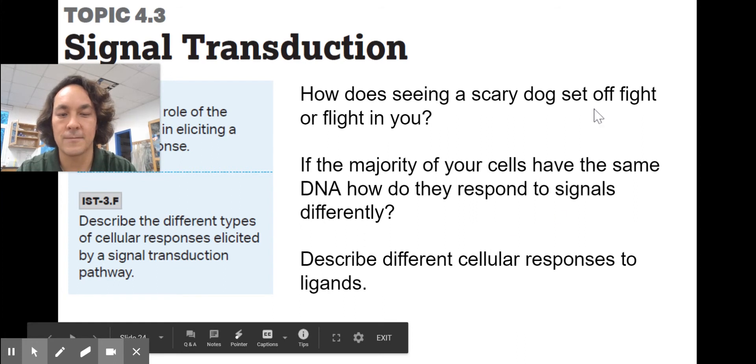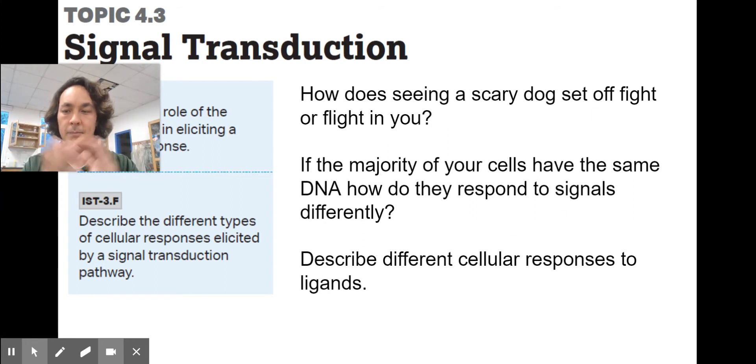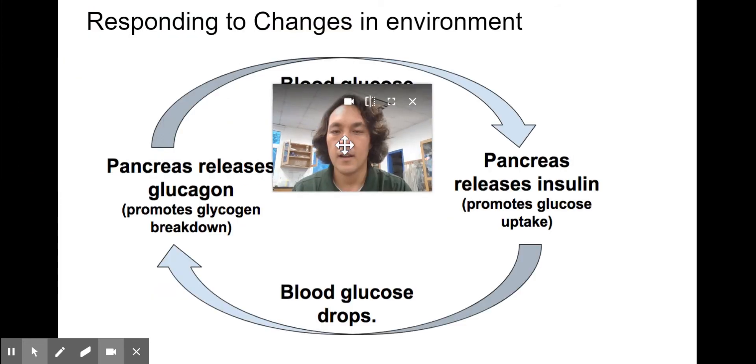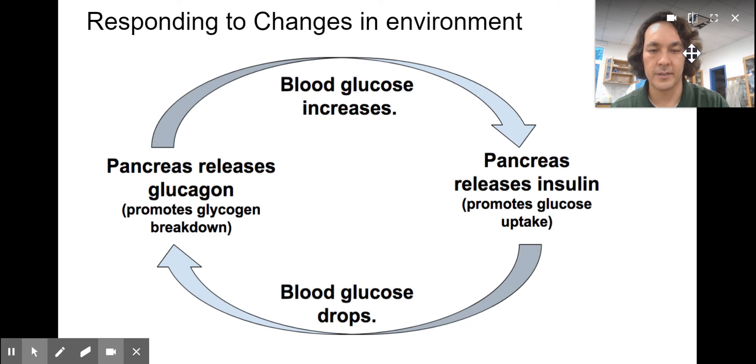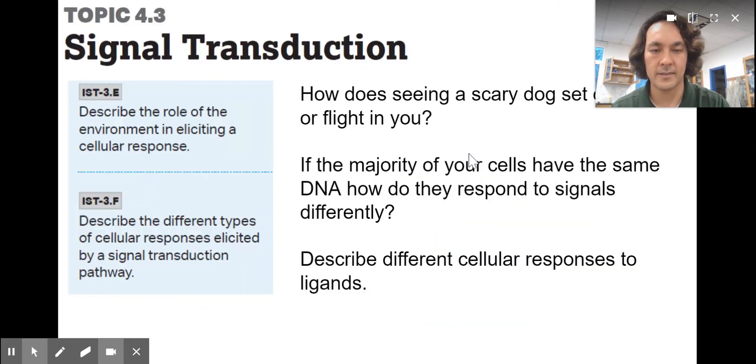This second one is just fascinating. If you start out as one fertilized egg and then through the process of mitosis and the cell cycle, make trillions of cells, but have the same DNA, how do you have some cells that are intestinal cells, some cells that are neurons or some cells that are photoreceptors and how do they respond to signals differently?